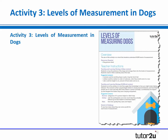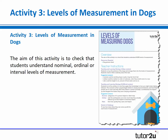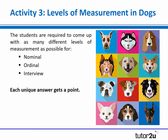The third activity, which one of our contributors Alison designed, is called Levels of Measurement in Dogs. The purpose of this activity is to stretch and challenge and check understanding of these different categories by getting students to think quite creatively. All you need are pictures of dogs - it'd be quite nice if you could get your students to bring in pictures of dogs, but we have also provided a set of cartoon dogs that will work perfectly for this activity. The idea is that students are required to come up with as many different levels of measurement as possible for nominal, ordinal, and interval.